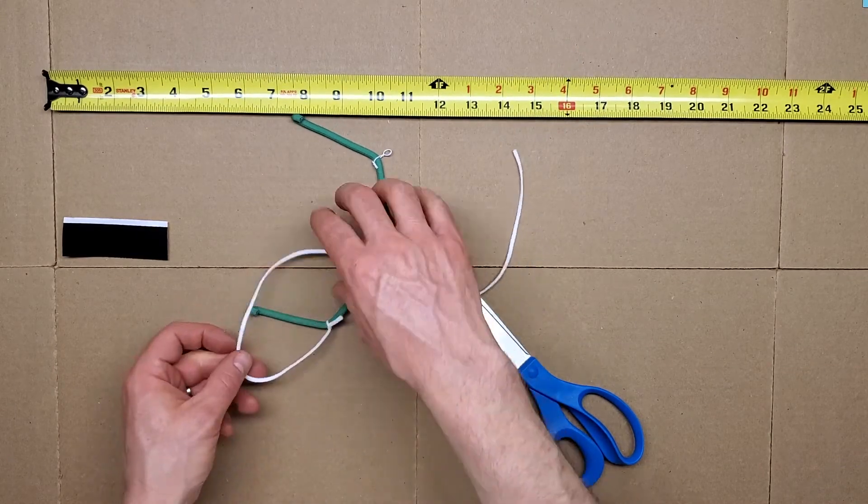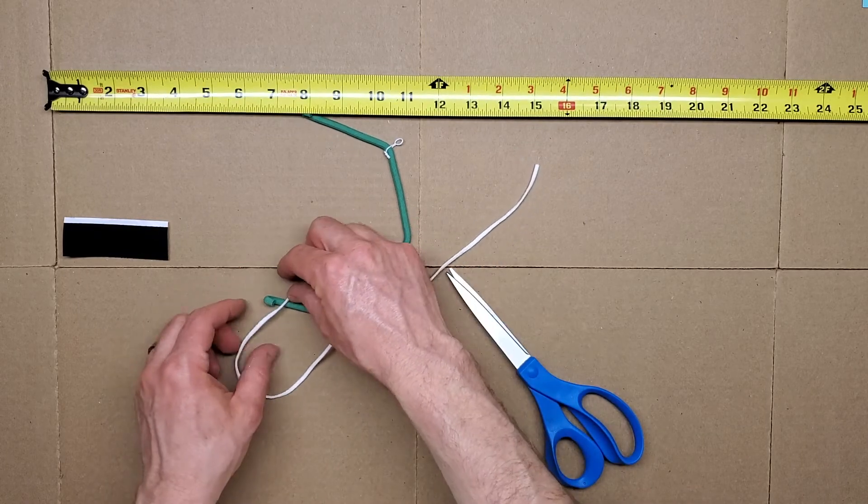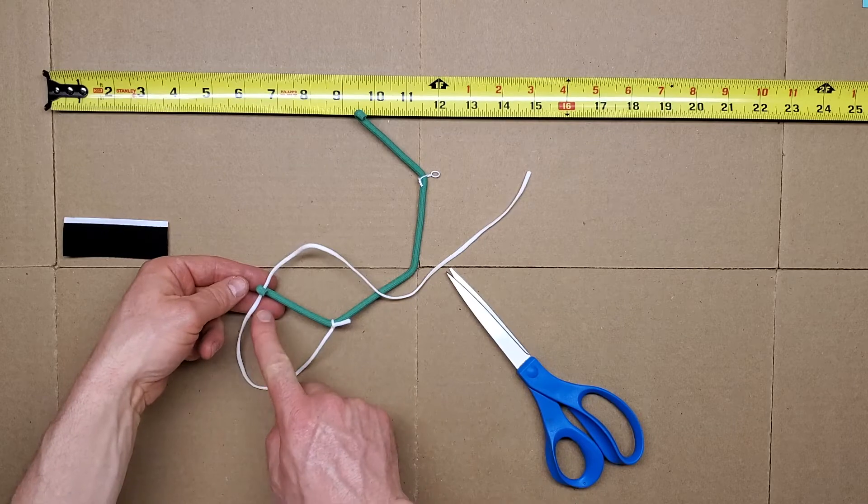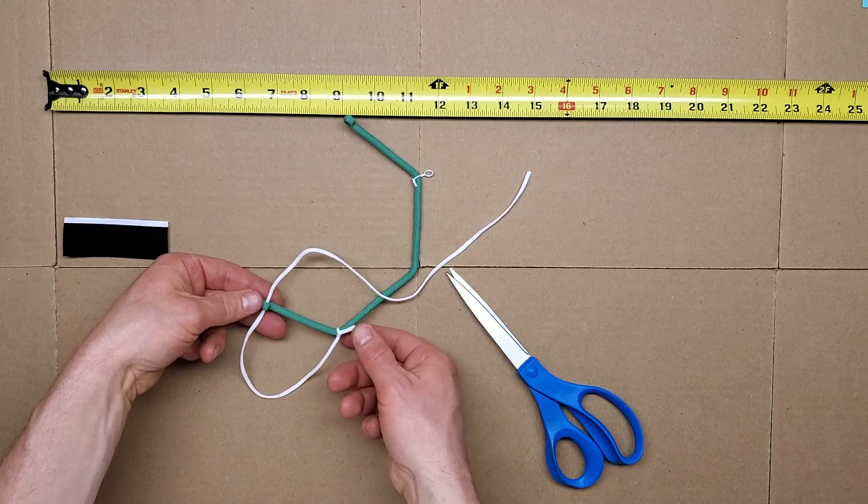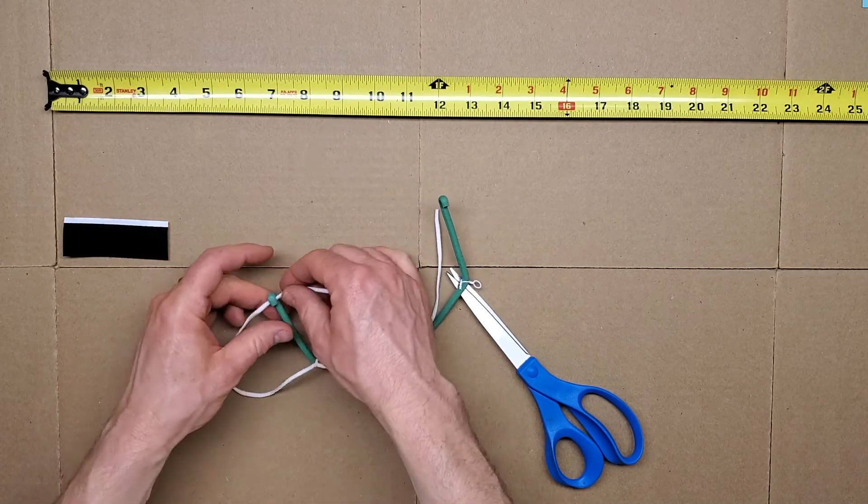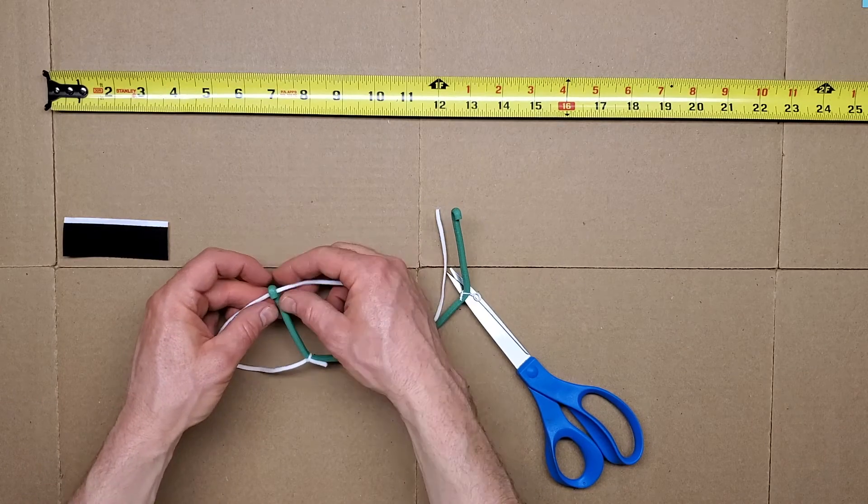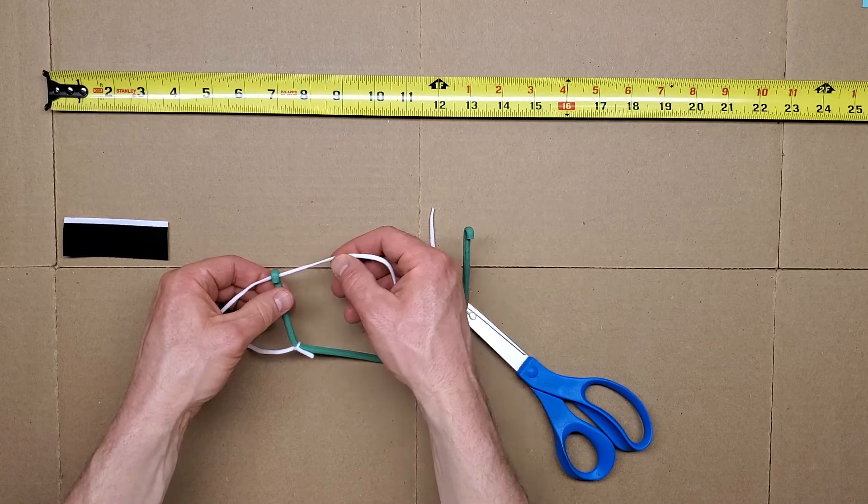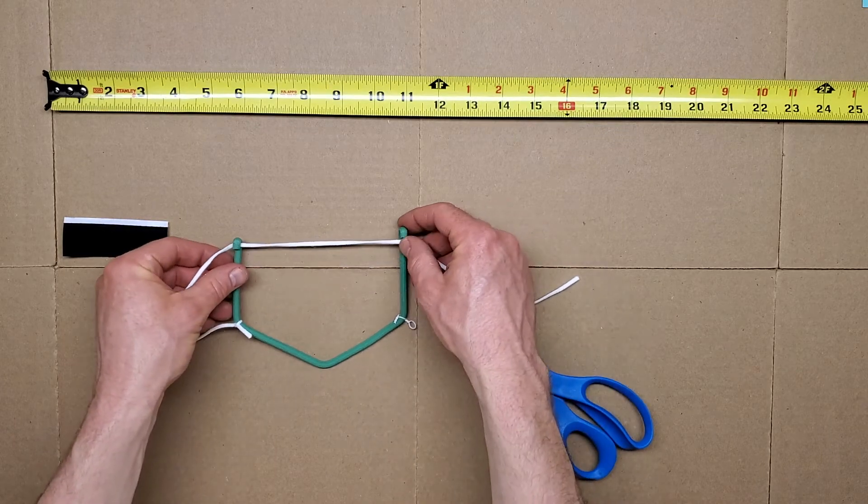Then we're going to feed the elastic around to make an ear loop and feed it into the end loop on the garden tie. Squeeze that shut. It should pull through there if you pull hard, but otherwise stay in place.